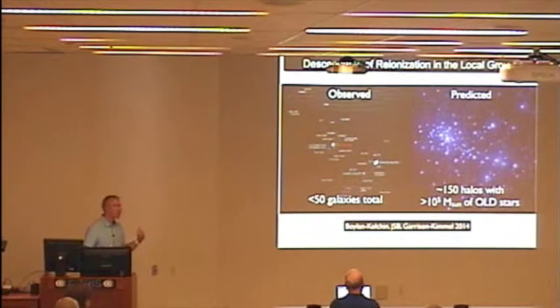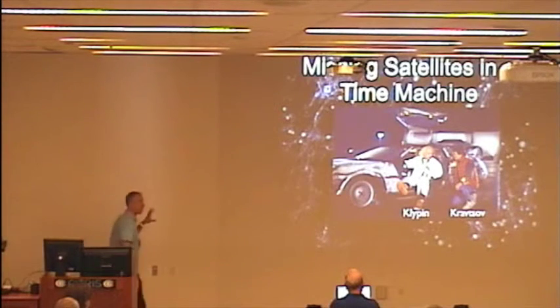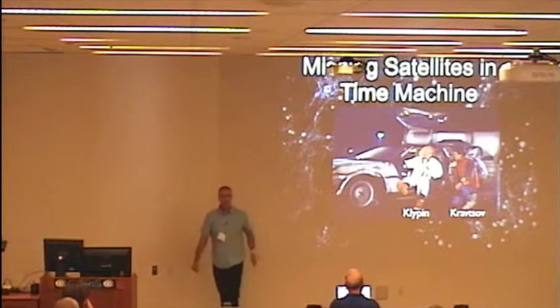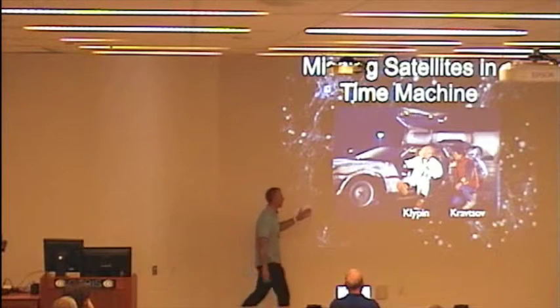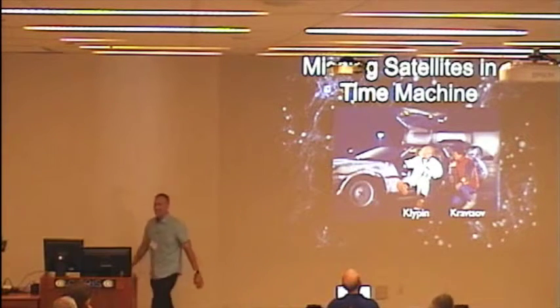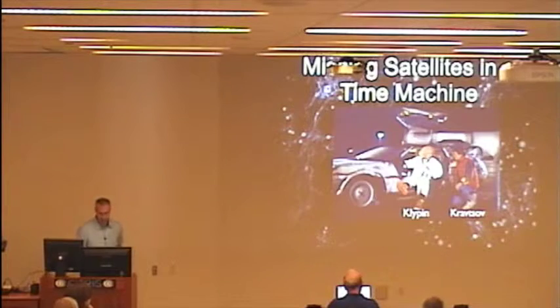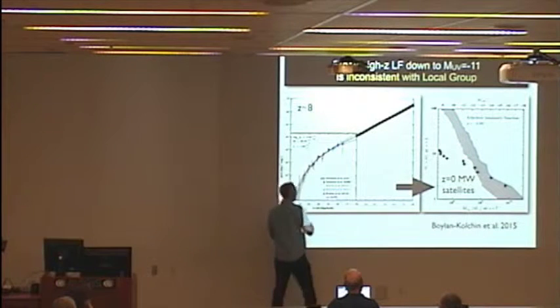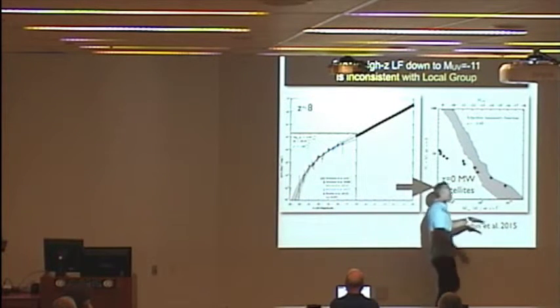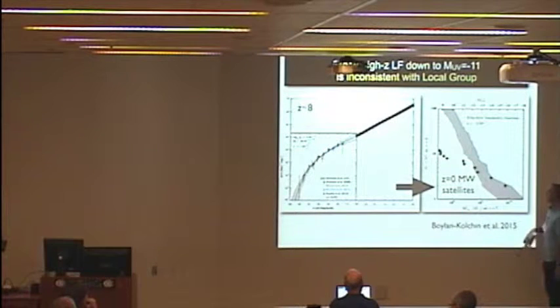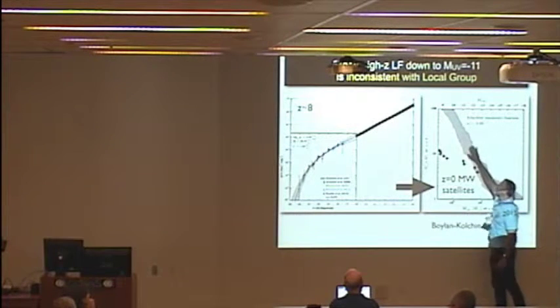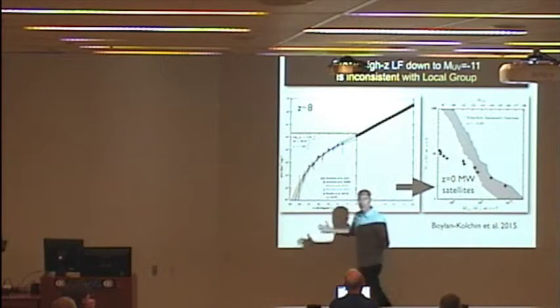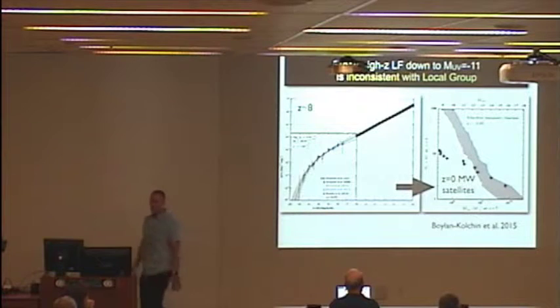So if you think about what this really is, it's missing satellites in a time machine. Because it's just the missing satellites problem tracked back to early times. So here's just an example. If you take this kind of luminosity function and extrapolate it to Z of 8 and then do the mapping and ask, where should things end up in the local group today? Here's what you predict, the shaded band, and here's what's observed. So you get this massive missing satellites problem basically. The ancient missing satellites problem.